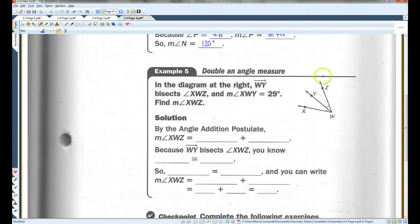Example 5. Last example. In the diagram at the right, WY bisects, that means it cuts in half this angle. XWY is 29 degrees. Find XWZ. So this is 29 degrees and it's bisected. So this is also 29 degrees. By the angle addition postulate, the measure of angle XWZ equals the measure of angle XWY plus the measure of angle YWZ. Remember, the W has to be in the middle because the W is the vertex. Because it bisects XWZ, we know.